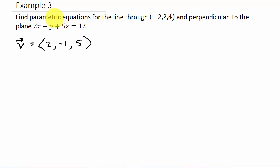and we want our parametric equations perpendicular to this plane, then that means the equation of our line is going to be parallel to this vector. Because our line is perpendicular to the plane and this vector is perpendicular to the plane, that means the vector and the line are parallel.